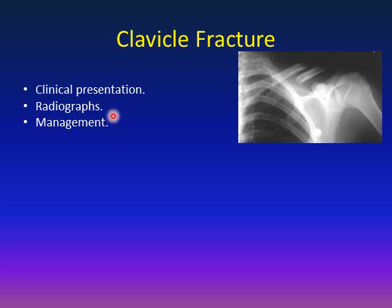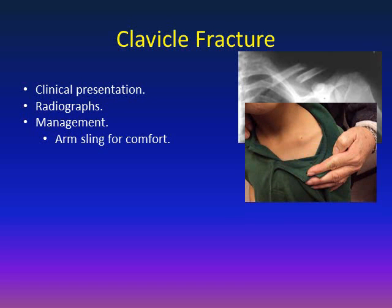What is the management for fractured clavicle? First, you have to examine the child — examine the neurovascular bundle, making sure it's intact, keeping in mind that the brachial plexus is very close to the clavicle and may be injured in the same trauma. Most fractured clavicles can be managed with an arm sling for comfort. Once the child feels more comfortable, he can take the sling off. Warn the family that healing will produce a bony callous that may be unsightly, especially for females.